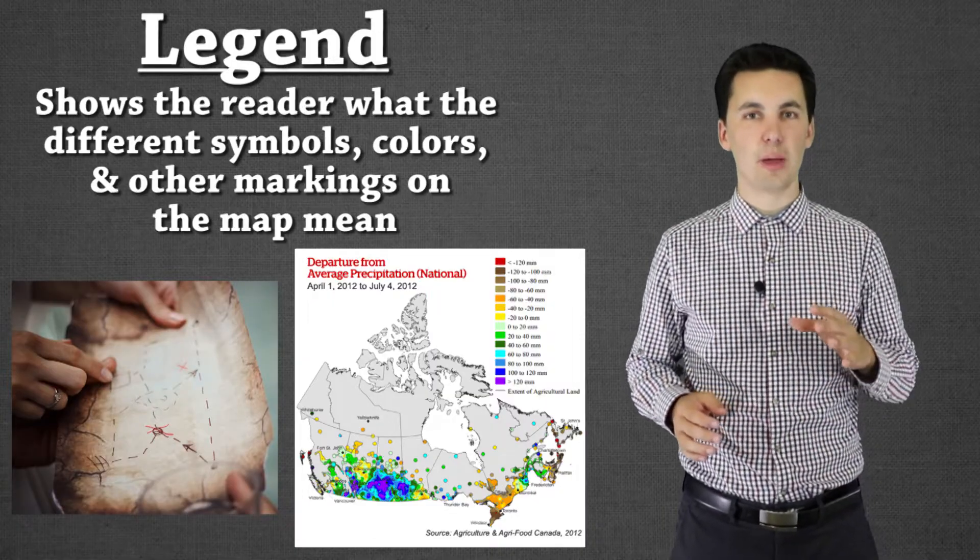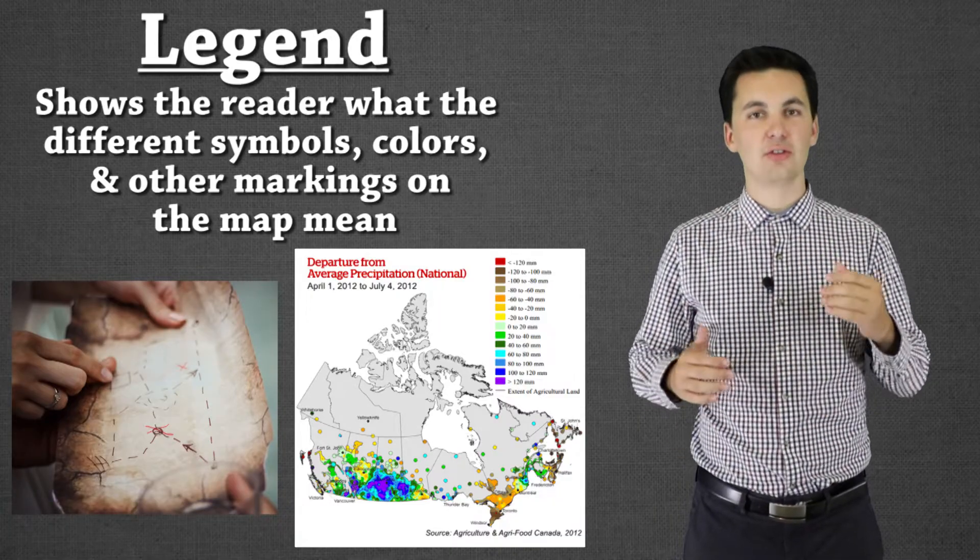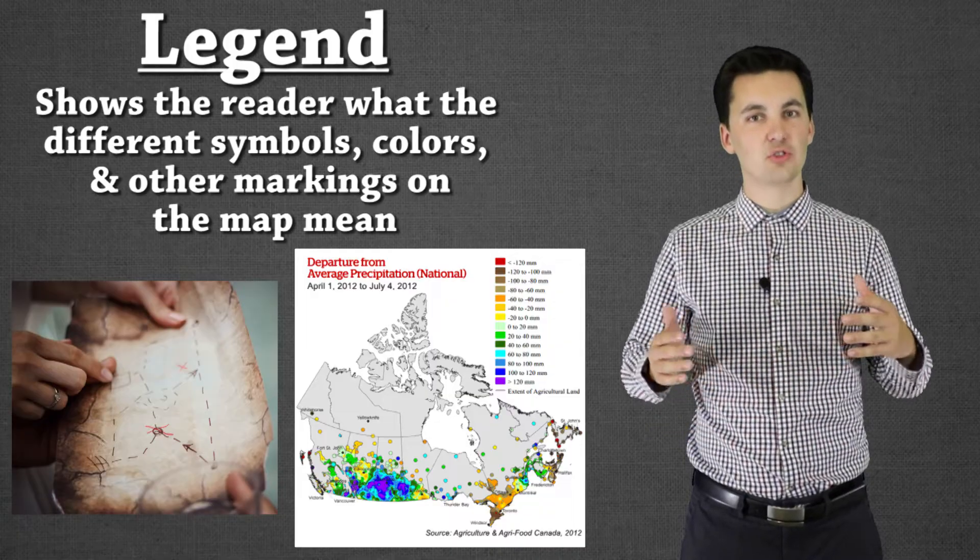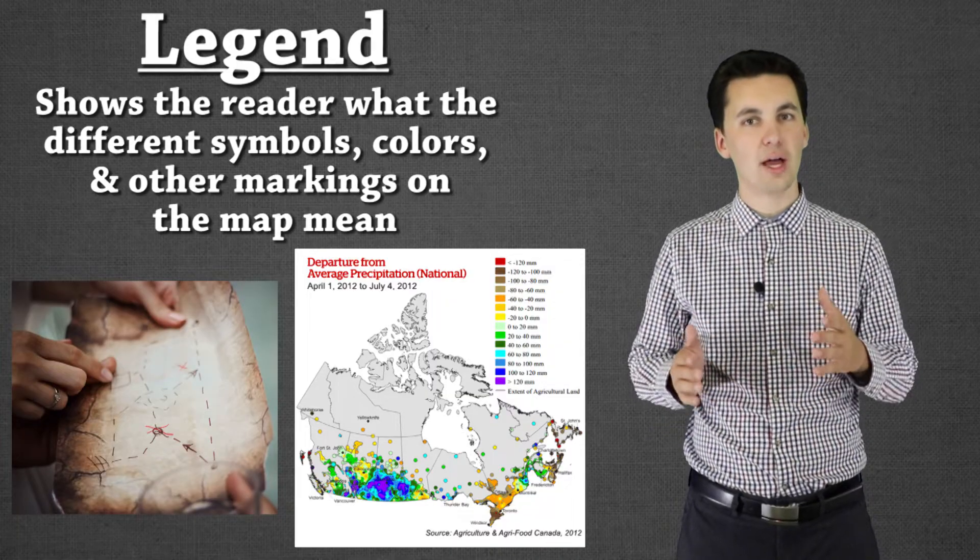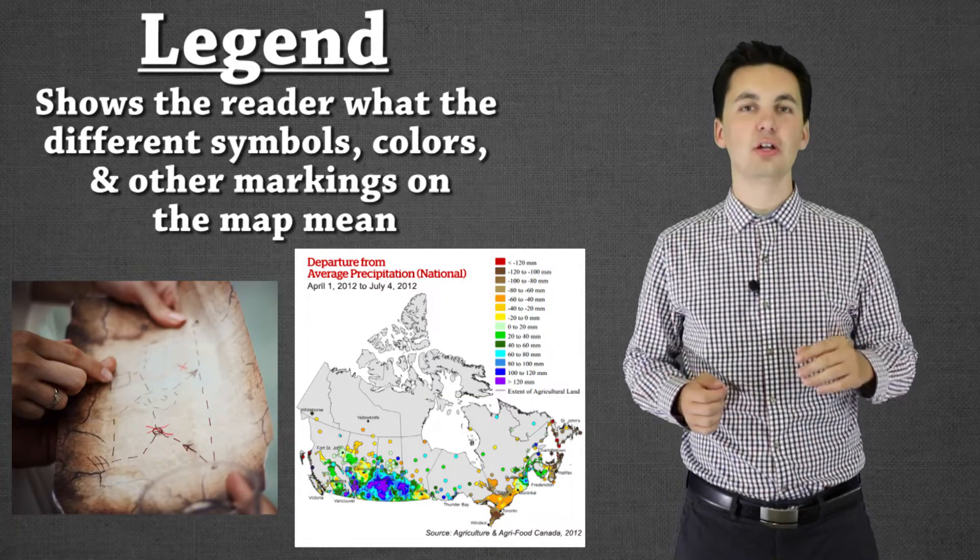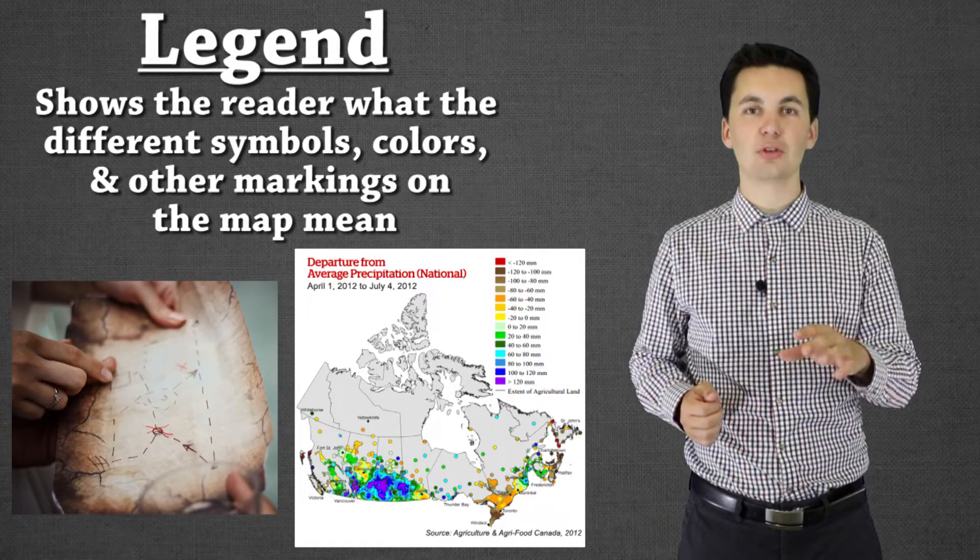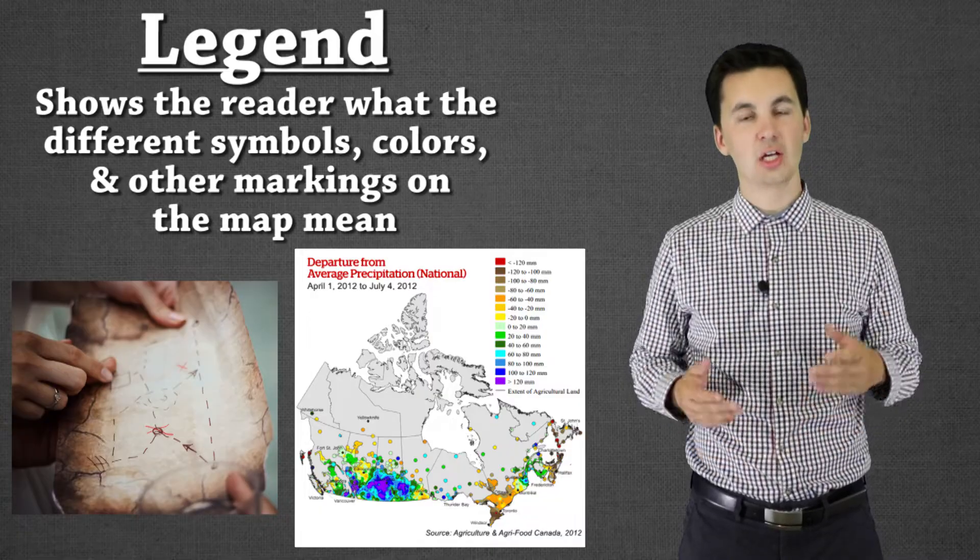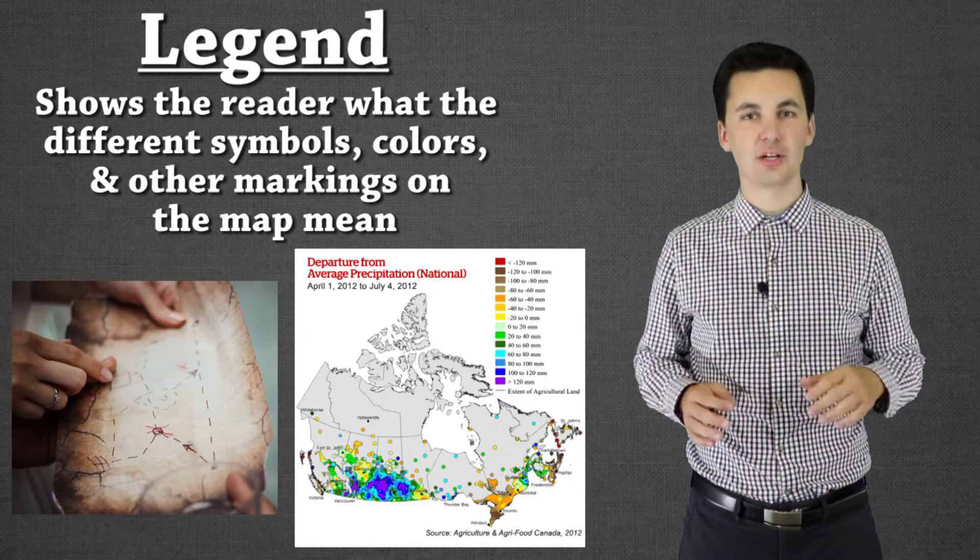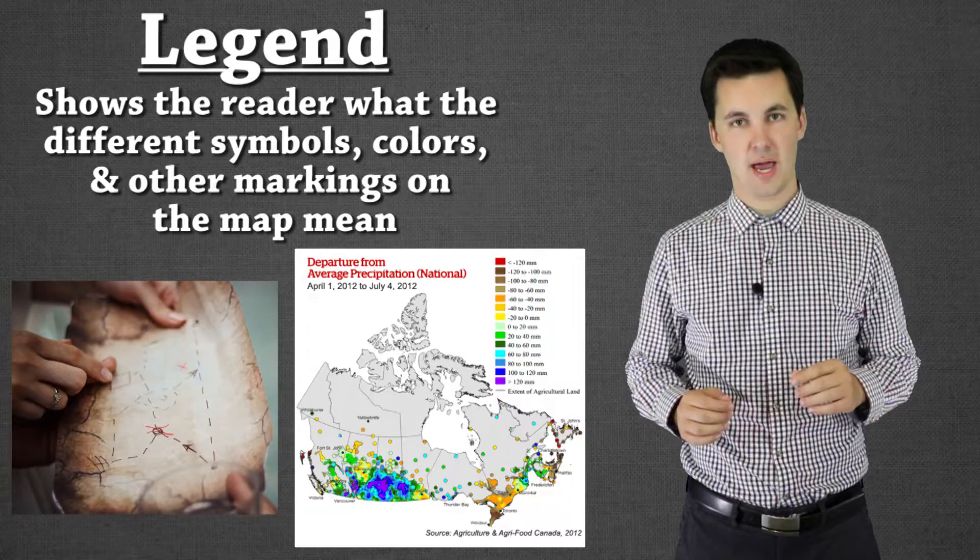This will be really important in our class because we're going to be looking at a lot of different maps that present data and the data will be colored in different shapes and sizes. We'll have to rely on the legend to fully understand exactly what's being presented to us so we can interpret everything correctly. The legend again is the key that will explain what is happening on the map.